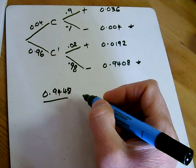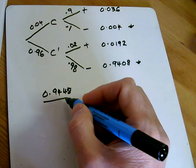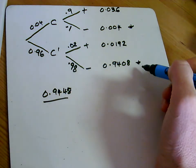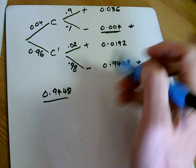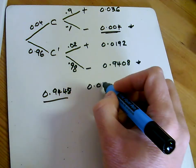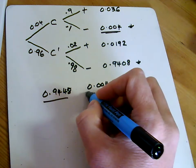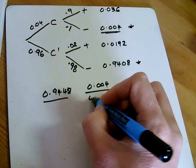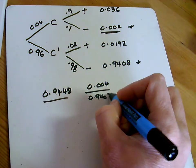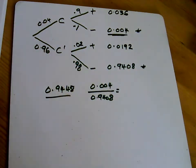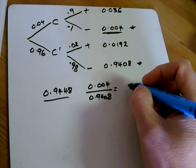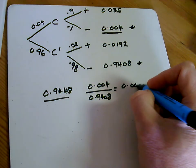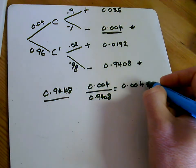A doctor randomly selects a person from the population and tests them for the condition. Given that the test is negative, so we know we're negative, find the probability that they do have the condition. So that's that one. So this is 0.004 out of 0.9408. So that's tapping into the calculator, 0.00425.